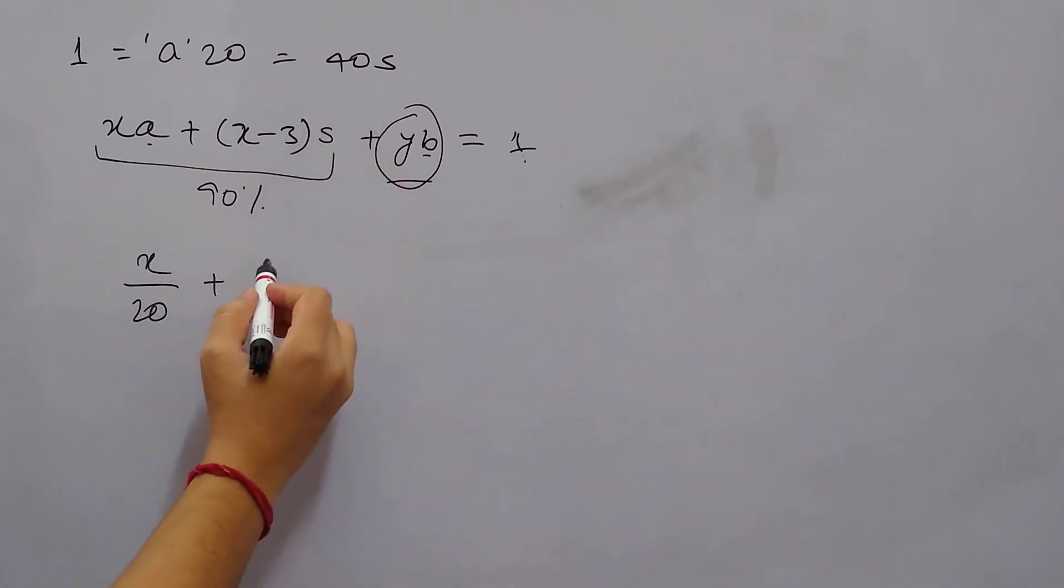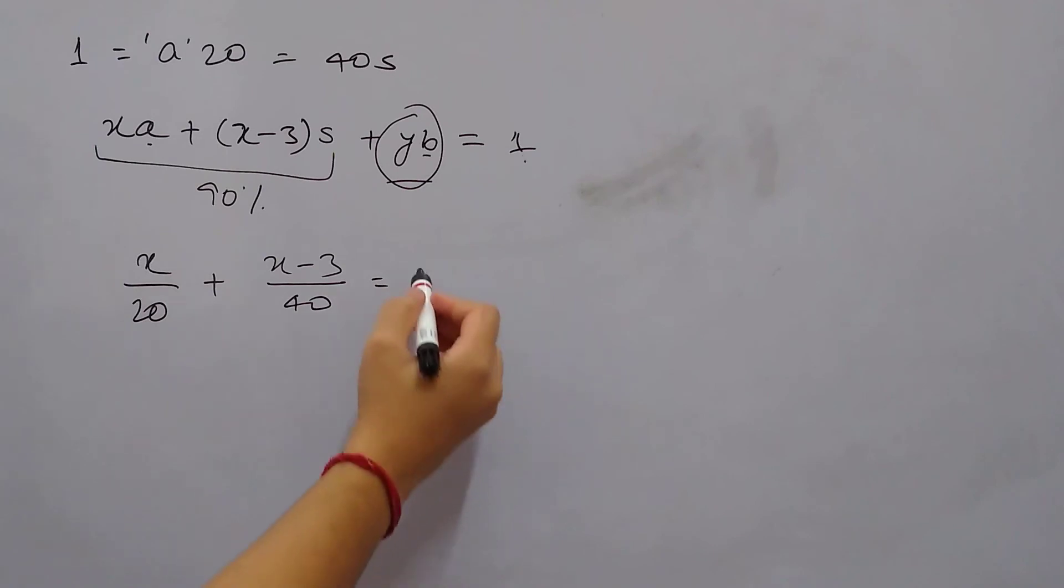So x minus 3 by 40, this is 90% of one, so you can say 9 by 10 or 90 by 100. This is the equation that we get.